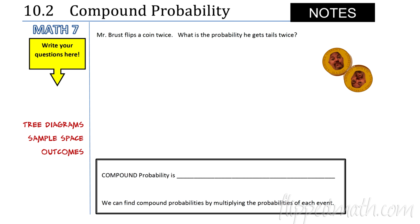Welcome back. In unit 10, section 2, we're talking about compound probability. Just like compound words where you put two together, compound probability is the probability of two or more events happening at the same time or one right after the other. We can find compound probabilities by multiplying the probabilities of each event.